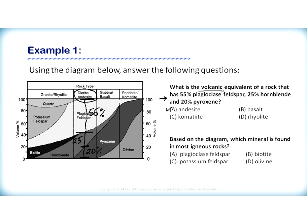Question two of example one: based on the diagram, which mineral is found in most igneous rocks? Looking at the diagram, the mineral field that extends across the widest variety of igneous rocks is plagioclase feldspar, which is found in all igneous rocks. So the answer to the second question would also be A — plagioclase feldspar.